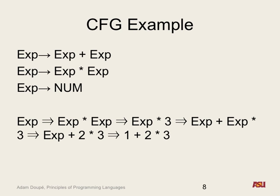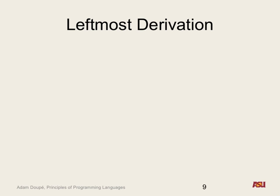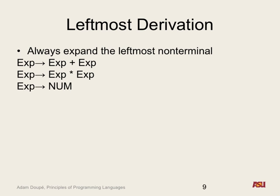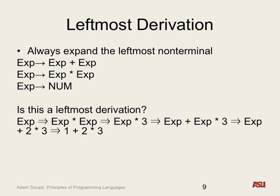We can define two canonical orders: leftmost derivation — always expand the leftmost non-terminal — and rightmost derivation — always expand the rightmost. We can ask: is a given derivation leftmost? If at any step you expand a non-leftmost non-terminal, it's not a leftmost derivation. Both leftmost and rightmost derivations can derive the same string — the steps just happen in a different order.